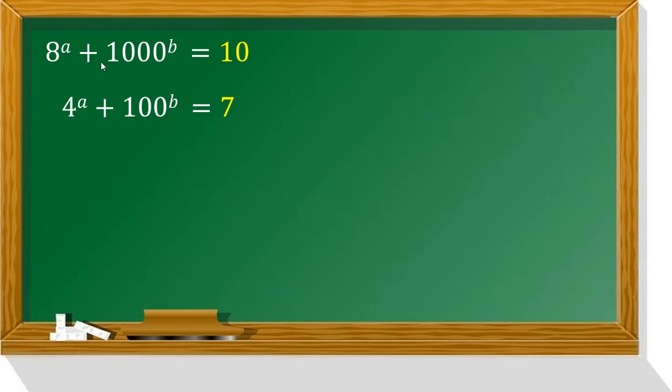8 to the a plus 1,000 to the b equal to 10. 4 to the a plus 100 to the b equal to 7.